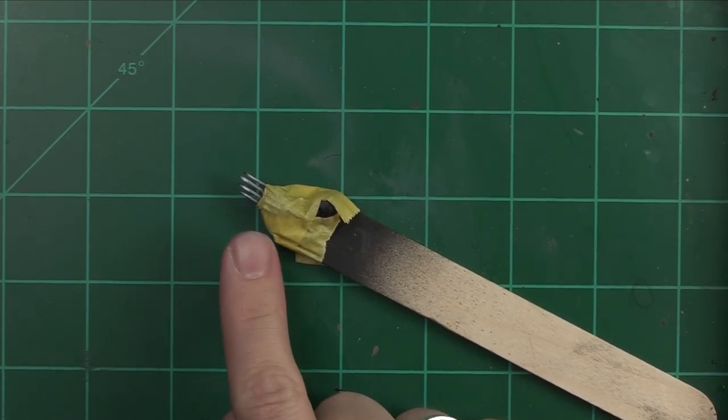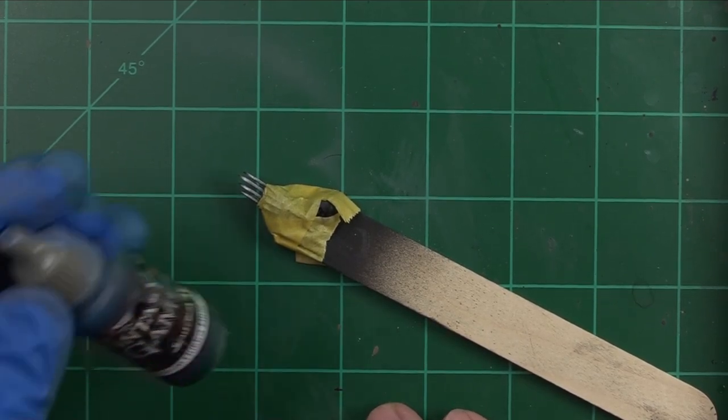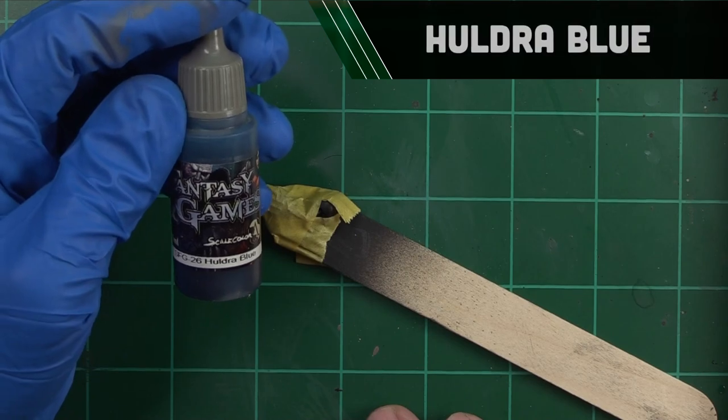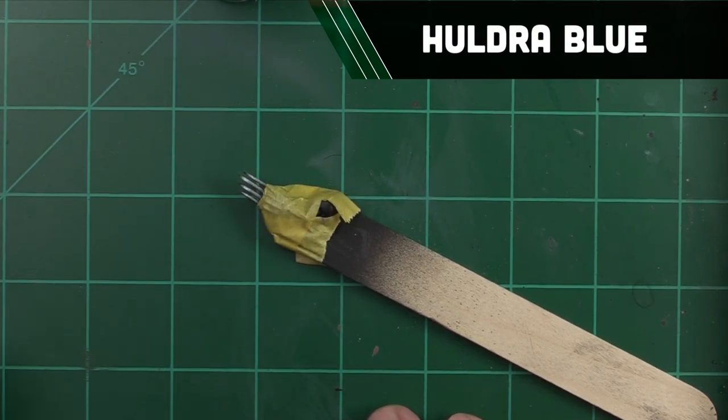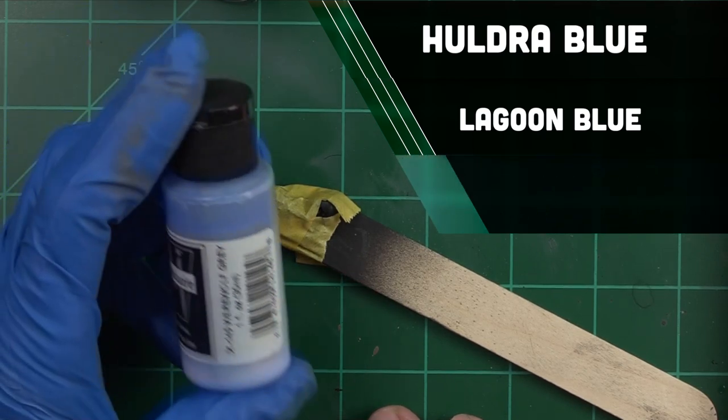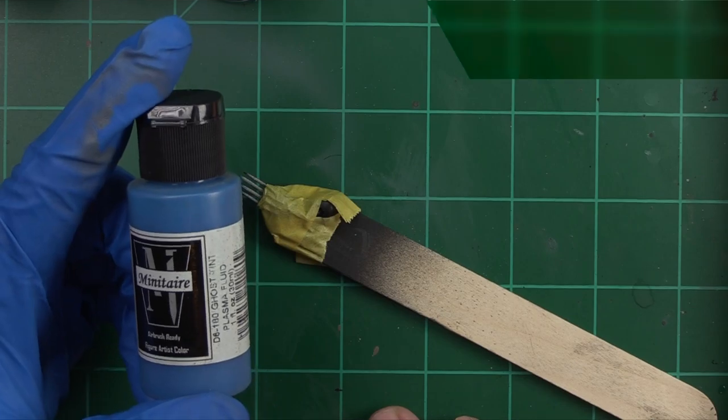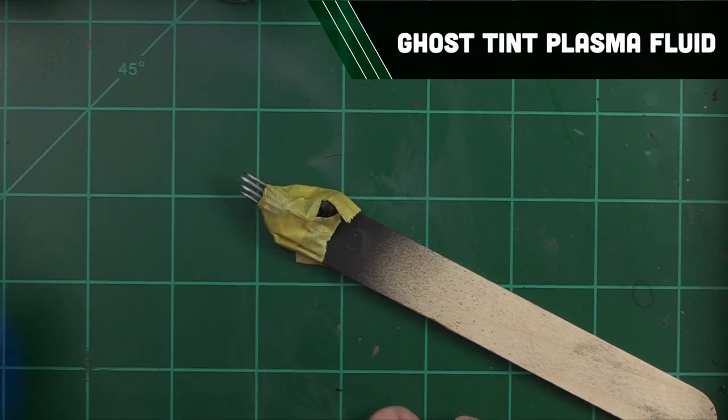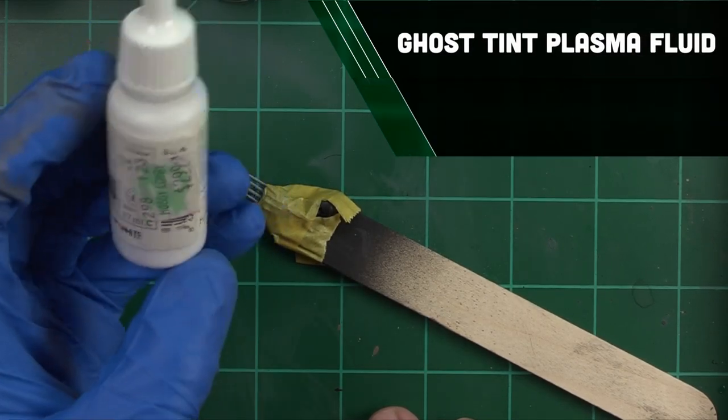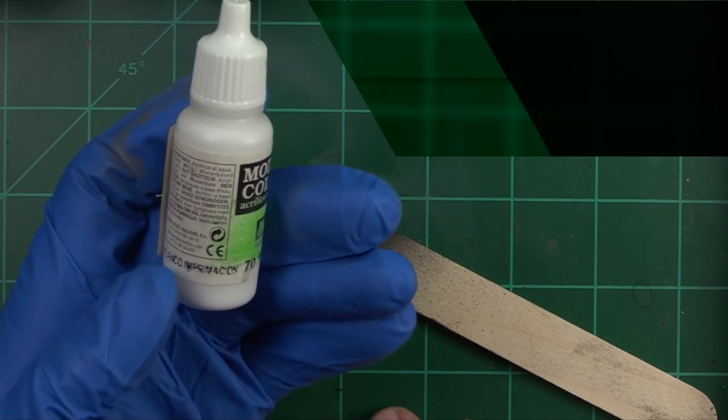With our claws masked off here, it's time for us to go ahead and grab the paint that we'll be using for today. To start things off, we're going to be using our Scale 75 Holdra Blue paint, followed up with our Minitaire Lagoon Blue, as well as Minitaire Werewolf Gray, as well as some Minitaire Ghost Tint Plasma Fluid. Tried and true. We're going to wrap things up with a little bit of our Foundation White from Vallejo. Any white you have will do, but this is what I've got on hand.